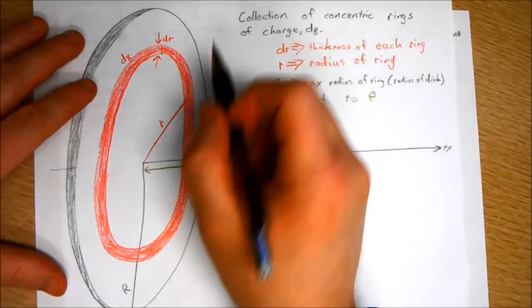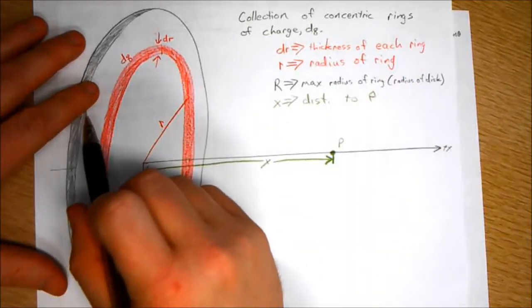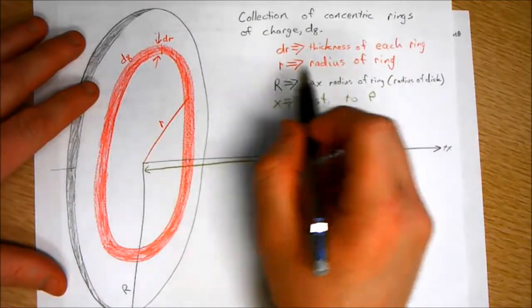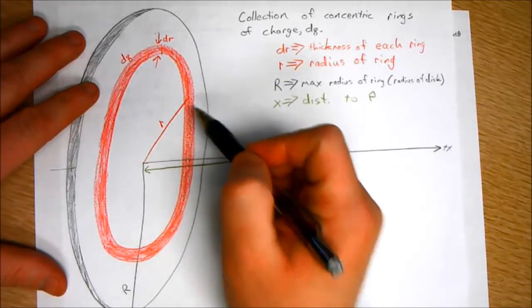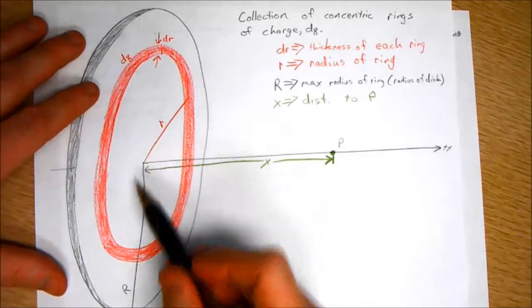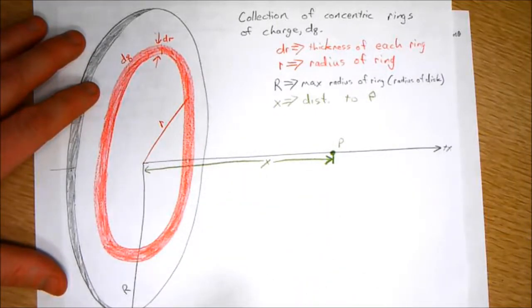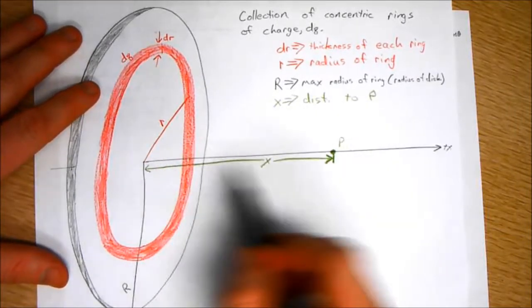Each ring has a charge Q. We define DR as the thickness of each ring, R as the radius of each ring, capital R as the maximum radius of each ring or the radius of the disc, and X is the distance to P.